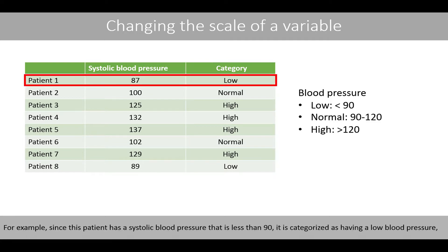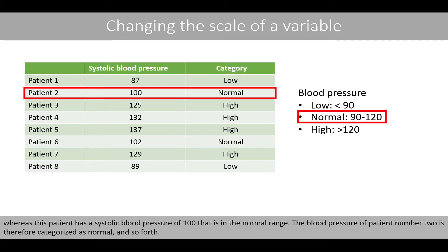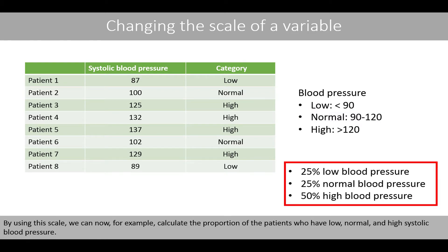For example, since this patient has a systolic blood pressure that is less than 90, it is categorized as having low blood pressure. Whereas this patient has a systolic blood pressure of 100, which is in the normal range. The blood pressure of patient number 2 is therefore categorized as normal, and so forth. By using this scale, we can now calculate the proportion of patients who have low, normal, and high blood pressure.